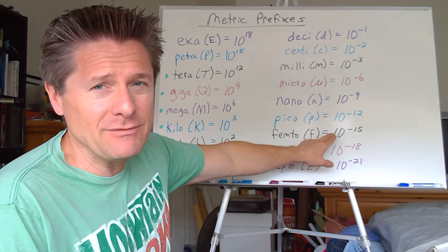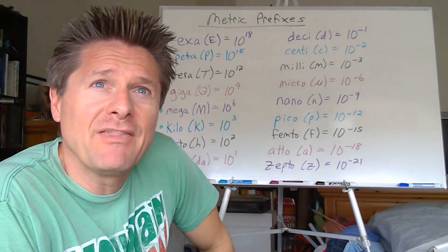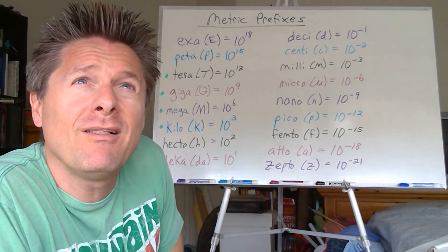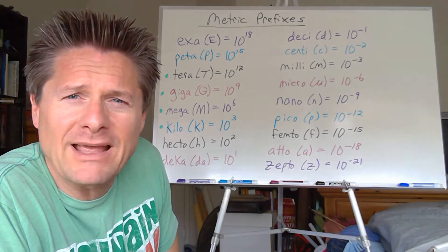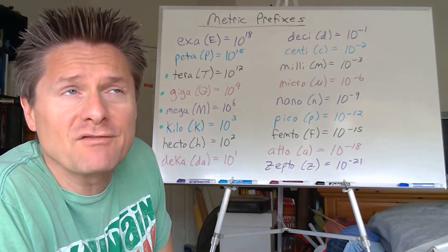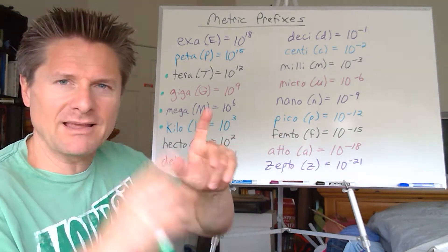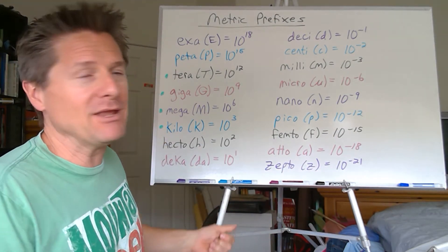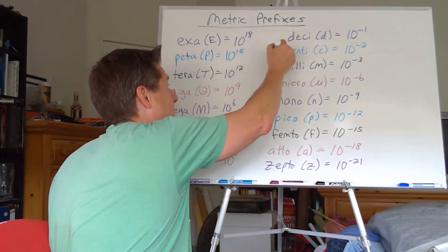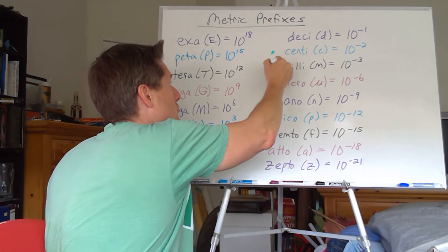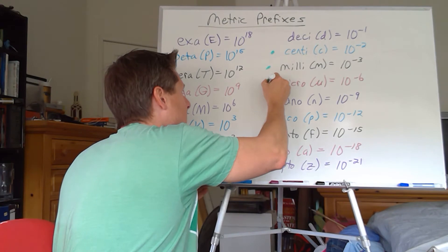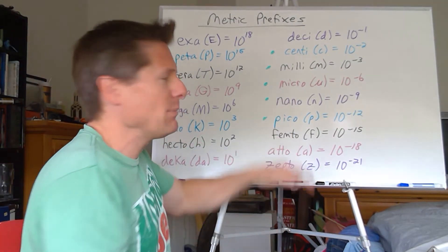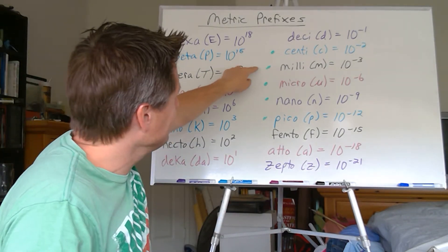Femto is 10 to the minus 15 — we don't really use that in chemistry, though pulse lasers now operate with femtosecond pulses, which is fascinating. Zewail won a Nobel Prize for applying femtosecond lasers. Atto is 10 to the minus 18, and Zepto is 10 to the minus 21 — we won't be using those. The ones you need to know for chemistry are centi, milli, micro, nano, and pico. Anything beyond pico isn't used very often. So memorize about nine prefixes total — make a flash card, carry it around, laminate it, tape it up in the shower.